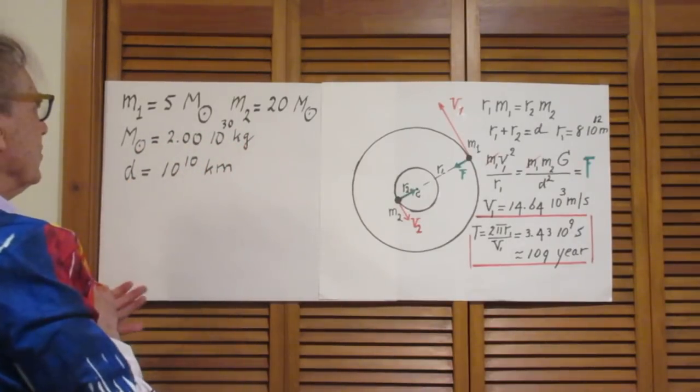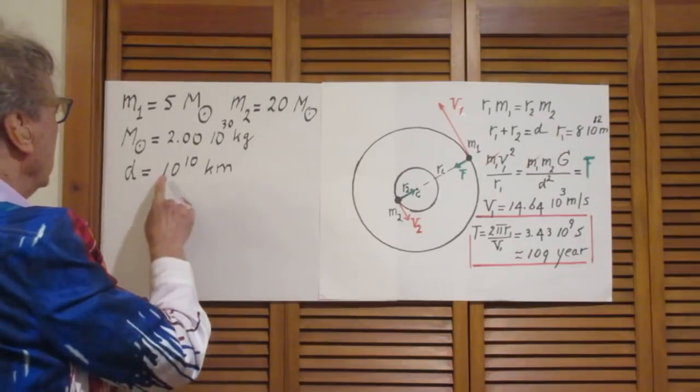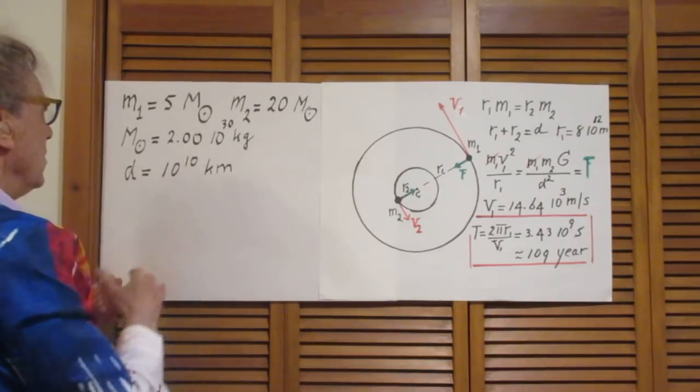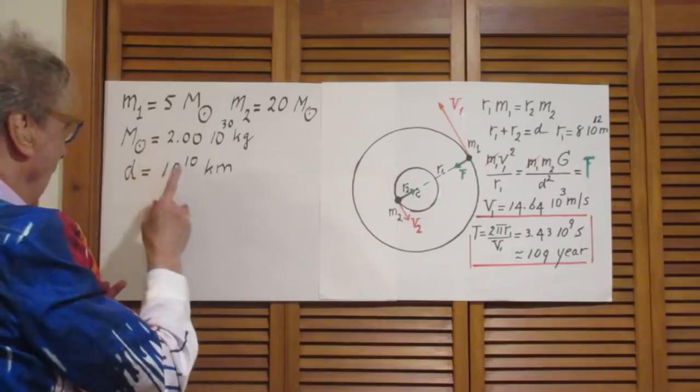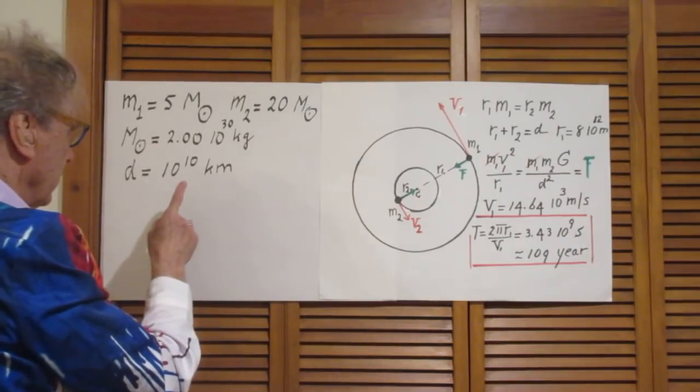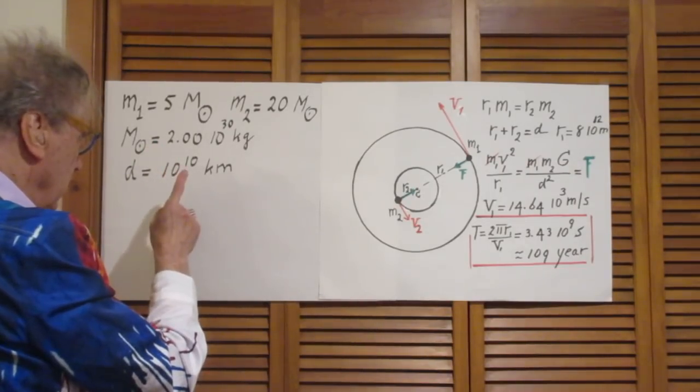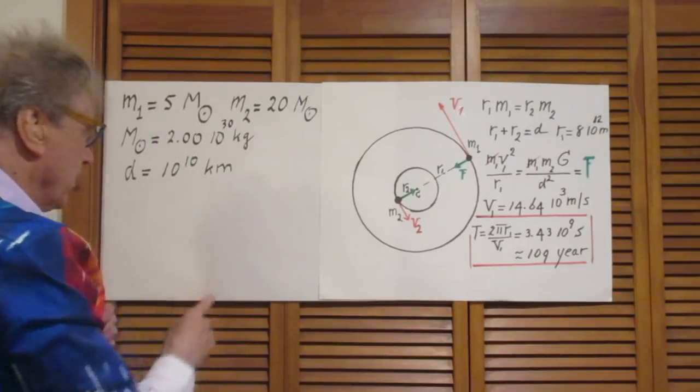And the distance between our two stars is 10 to the 10 kilometers, 10 to the 30 meters. And they are in circular orbits. That's important to know. In this case they are in circular orbits.